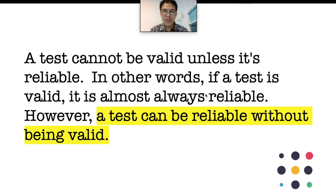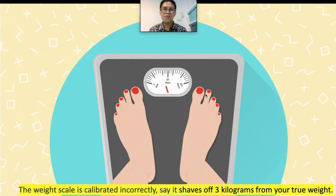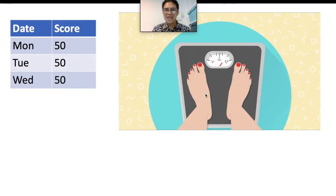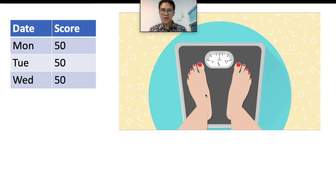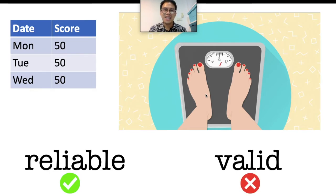To make you understand this, I'll give you an example. Let's say this is a weighing scale. However, this weighing scale is calibrated incorrectly — let's say it shaves off 3 kilograms from your true weight. So, on Monday you weigh yourself and you weigh 50 kilograms. The next day you weigh 50 kilograms. And on Wednesday you still weigh 50 kilograms. As you can see, it gives consistent results, which means that it is reliable. However, you know that this weighing scale was calibrated incorrectly, so although the results are reliable, it is not valid. If something is valid, it is also reliable.